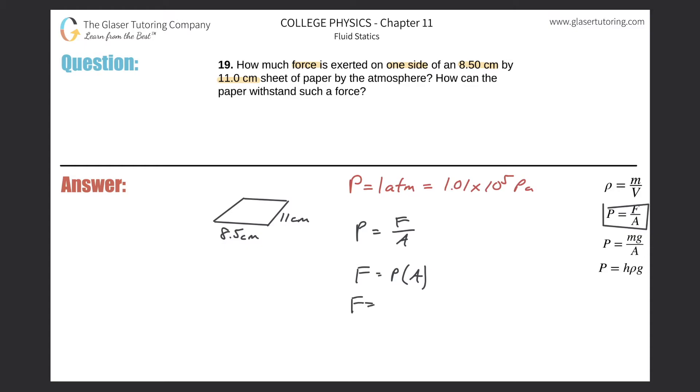So to find the force, it's going to be equal to 1.01 times 10 to the fifth, multiplied now by the area which we're going to have in terms of meters. So this is 0.085 times 0.11, those are the values in terms of meters. And we can now calculate the force. So this is 1.01 times 10 to the fifth times 0.085 times 0.11, and we get about 944 newtons.